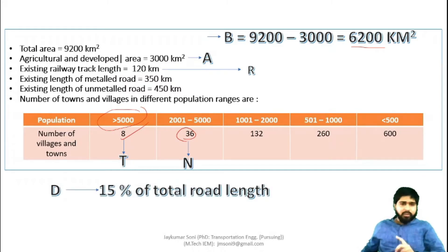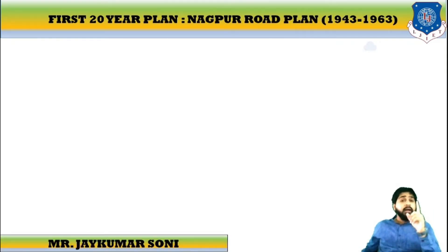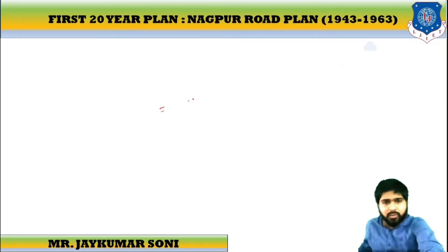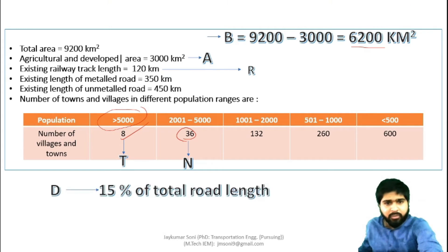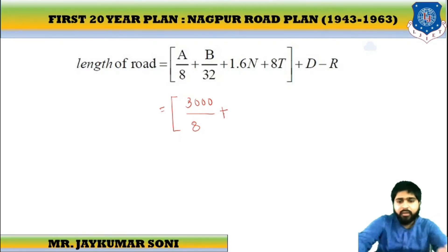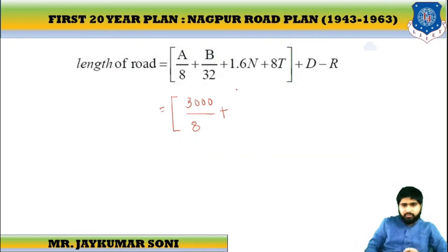D is 15% of the whole value. So putting the values into the equation for metal road: A is 3,000 km², giving A/8 = 3,000/8. B is 6,000 km², giving B/30 = 6,000/30. Then we add 1.6n + 8t + D − R, where n is 36 and t is 8.